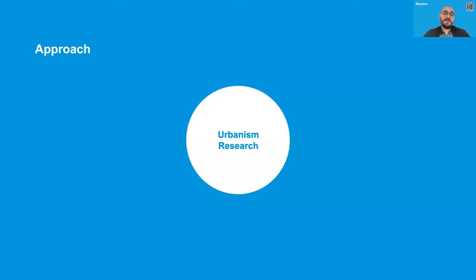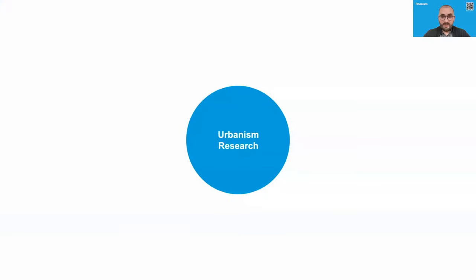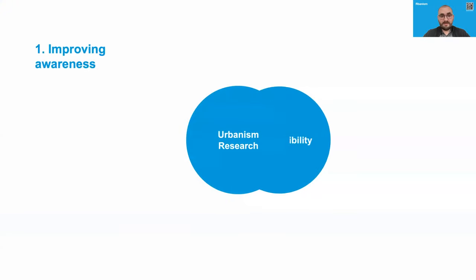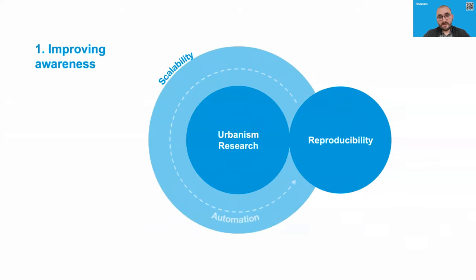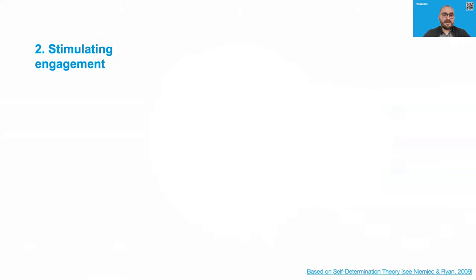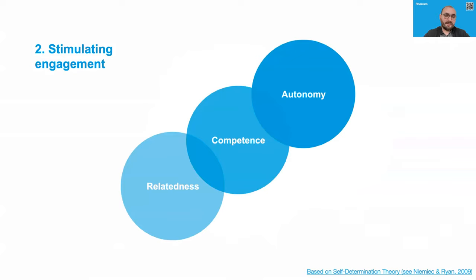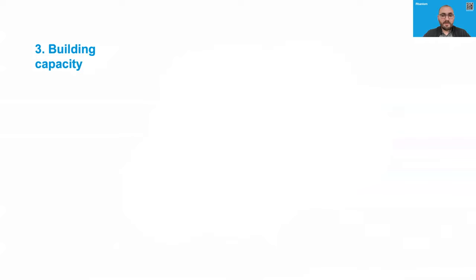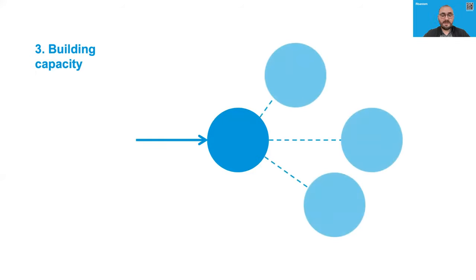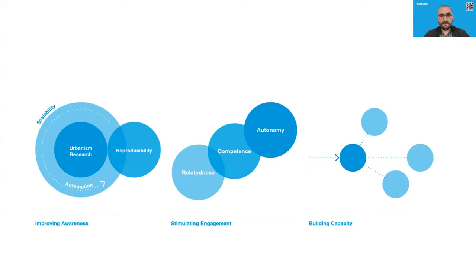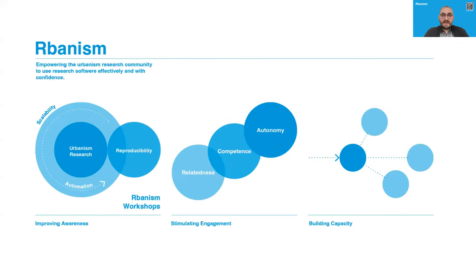We approach these challenges in three ways. First, by raising awareness of how reproducibility, scalability and automation can benefit urbanism researchers, and how these three qualities can improve research quality and enable new research questions. Second, by stimulating engagement with a focus on relatedness, competence and autonomy — key ingredients of intrinsic motivation. Third, by building capacity, enabling community members to share knowledge and skills amongst each other. We achieve these objectives by organizing workshops and challenges, and by synergizing with data and software carpentry workshops at TU Delft.